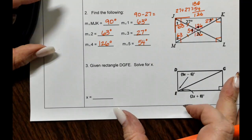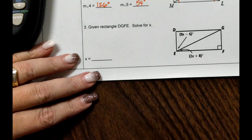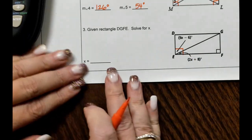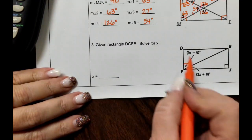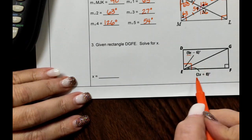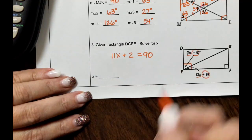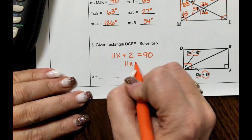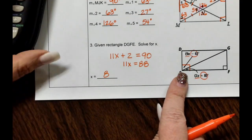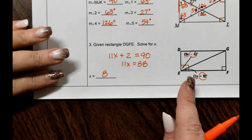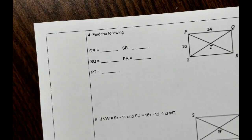It's important to recognize those isosceles triangles — don't forget them. For rectangle DGFE, solve for x. Always mark the right angles as soon as you read the word rectangle. The two angle parts together add up to 90°, so: (9x − 6) + (2x + 8) = 90. Combining like terms: 11x + 2 = 90, so 11x = 88, giving x = 8. The justification is that all four angles of a rectangle are right angles.